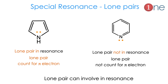Another special type of resonance involves lone pairs of electrons. The lone pair can participate in resonance or need not participate in resonance — it's all about stability. So it can be involved or cannot be involved. The first example is pyrrole: in pyrrole, the lone pair is involved and contributes to stability. Similarly, in pyridine, the six-membered ring, the lone pair does not participate in the system. So the lone pair can involve in resonance, and sometimes it won't.